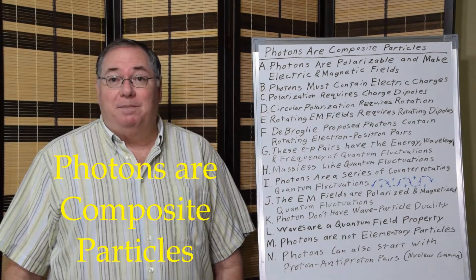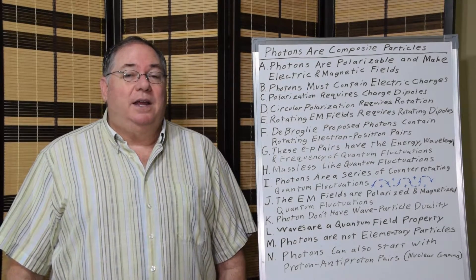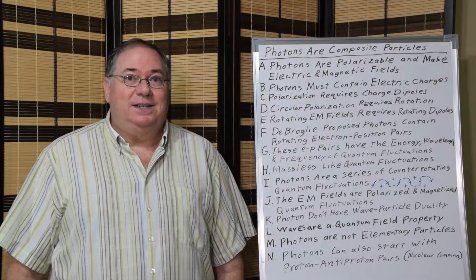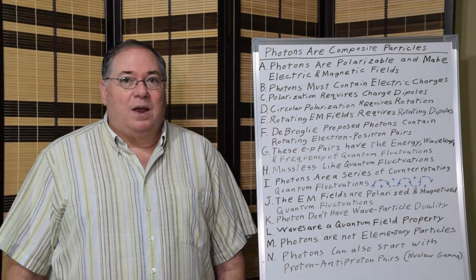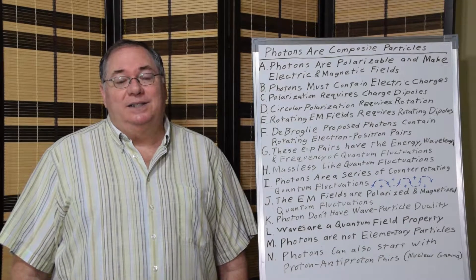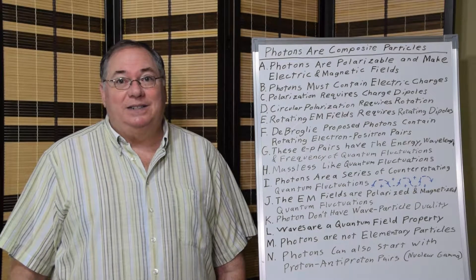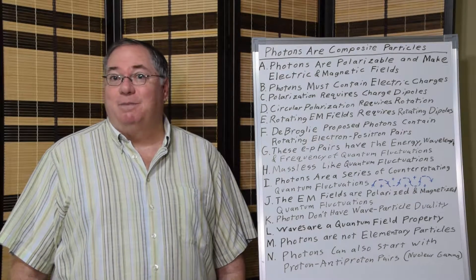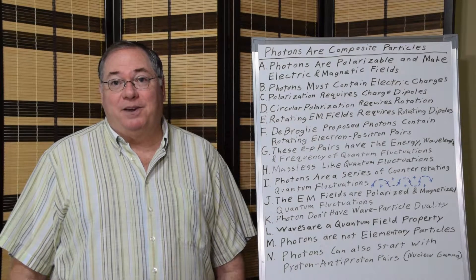When you study physics, particularly particle physics, and look at the table of elementary particles, you'll see photons listed as an elementary particle. What they don't tell you is that physicists back in the 1930s figured out that photons are composite particles and should not be considered to be elementary.